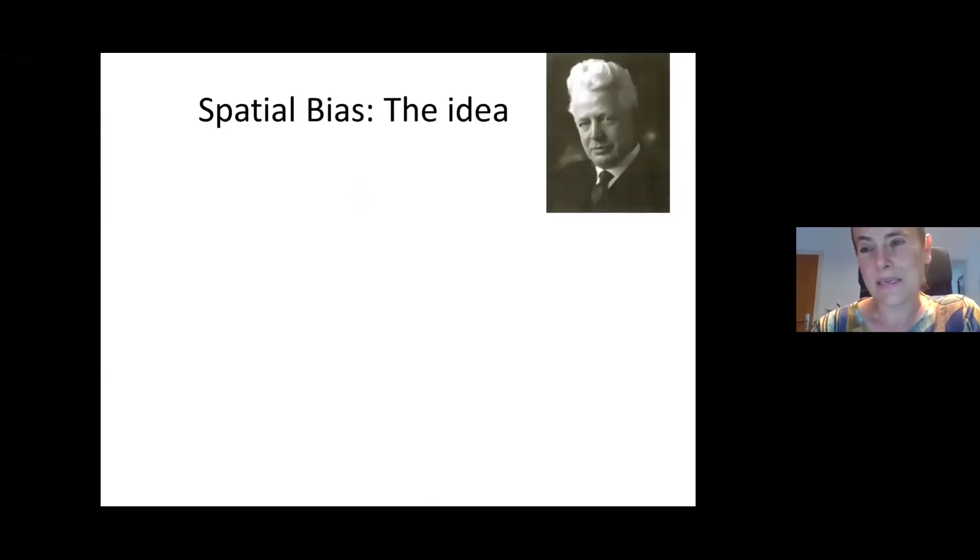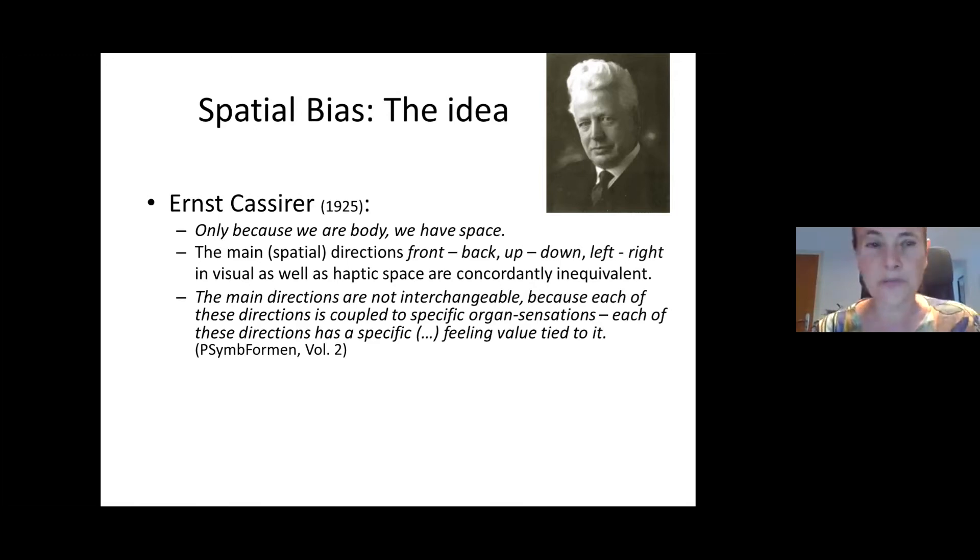The idea behind a research field called spatial bias is coming from social psychology and is preoccupied with dimensional movement and related meaning. The idea is actually also to be found in philosophy with Ernst Cassirer, who wrote in The Philosophy of Symbolic Forms in 1925: only because we are body we have space and the main spatial directions—front, back, up, down, left, right—in visual as well as in haptic space are concordantly inequivalent. He means inequivalent in meaning, so each spatial direction has their corresponding meaning dimension. He also says the main directions are not interchangeable because each of these directions is coupled to specific organ sensations, each of these has a specific feeling value tied to it.